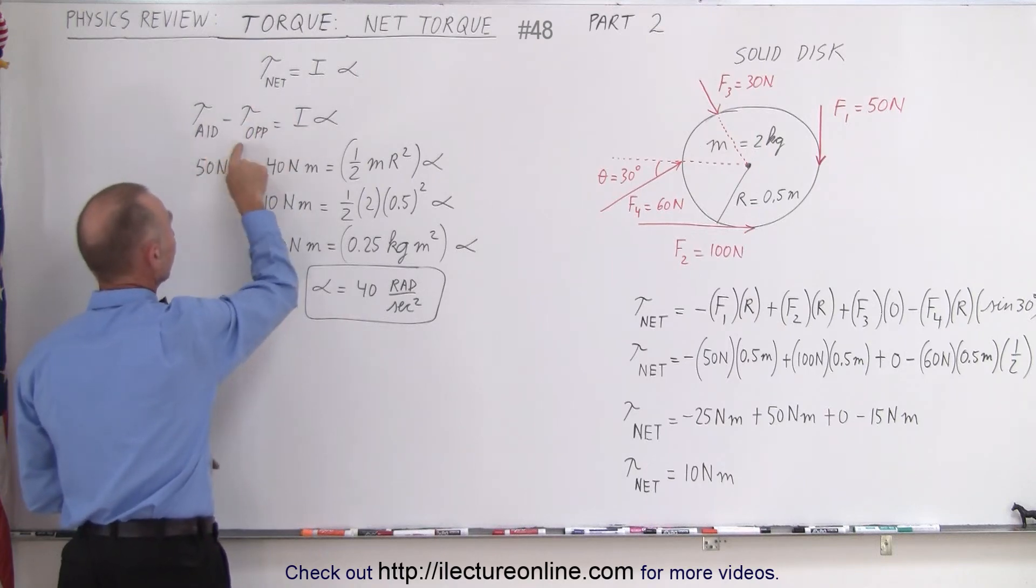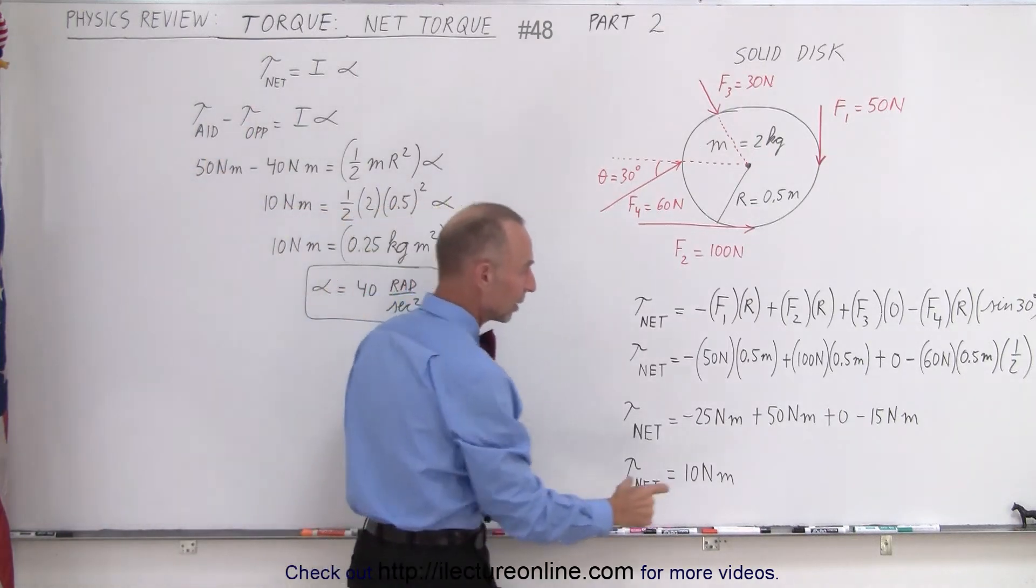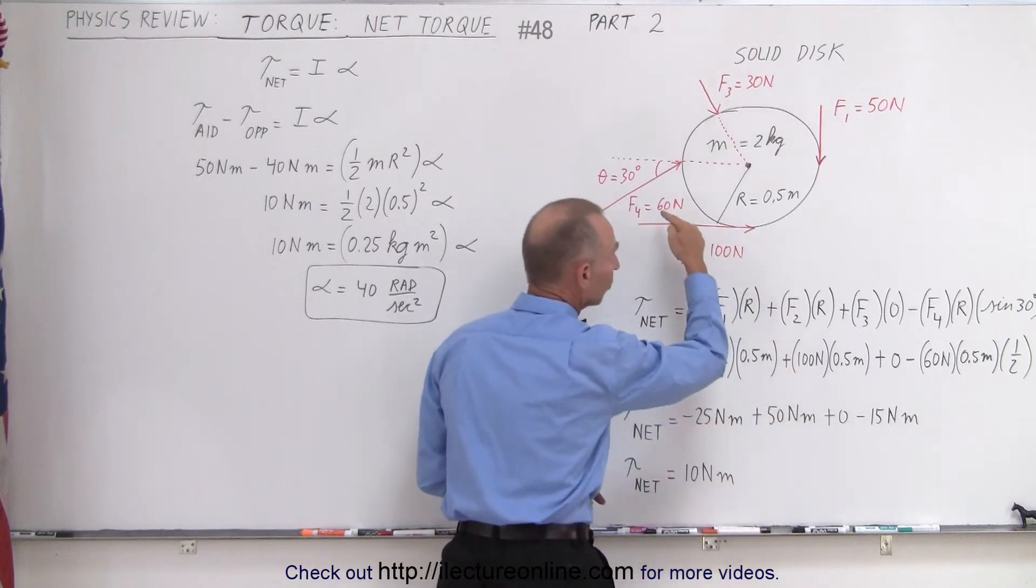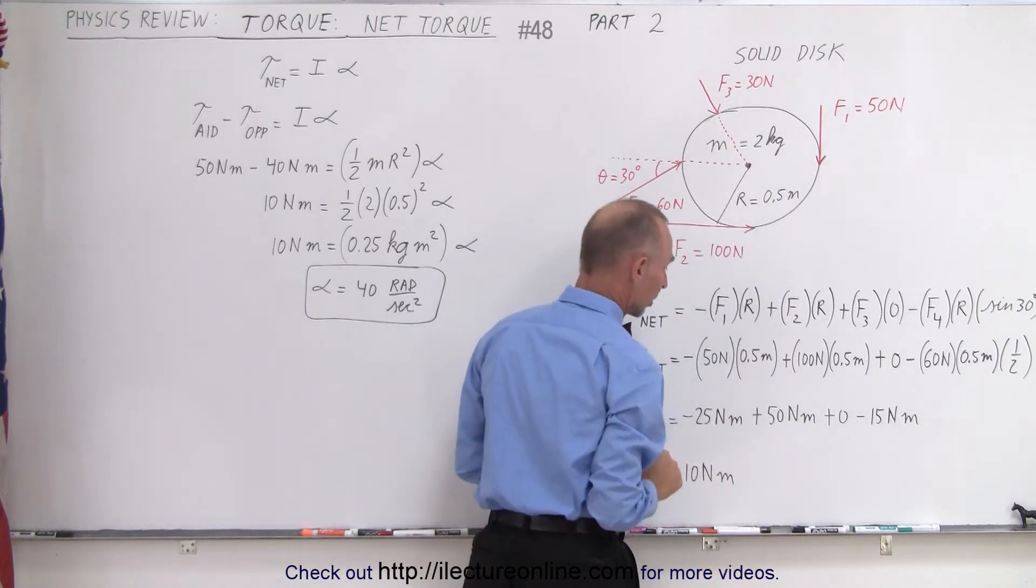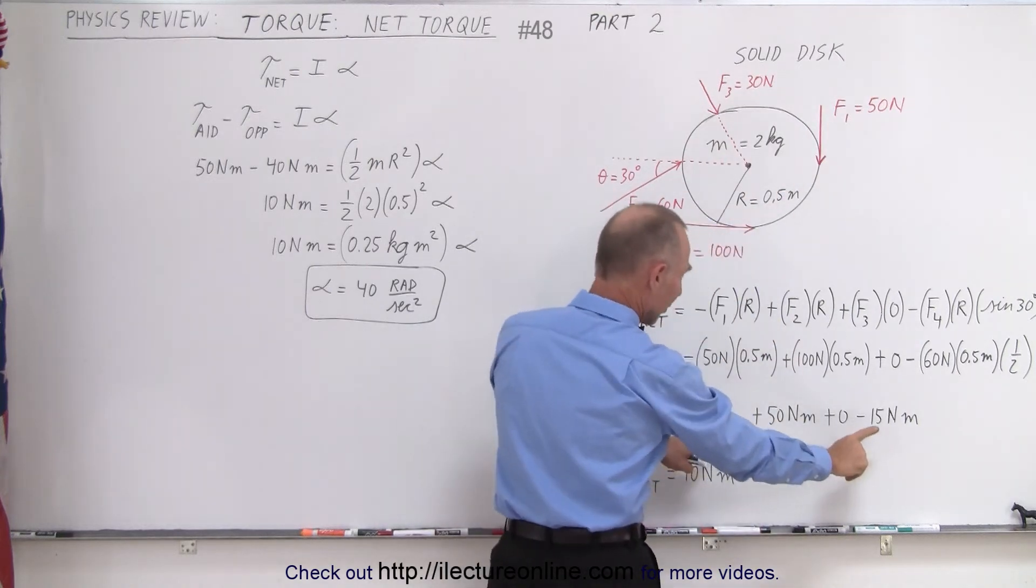The net torque is the torques aiding minus the torques opposing. So here's the aiding force, which causes acceleration to be in a counterclockwise direction.